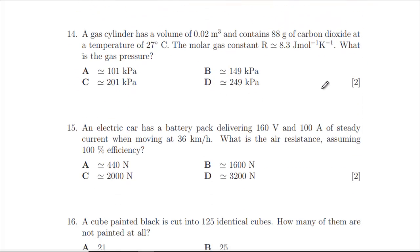Question 14: A gas cylinder has volume 0.02 cubic meters, contains 88 grams of CO2 at temperature 27 degrees Celsius. The molar gas constant R = 8.3 J mol^-1 K^-1. What is the gas pressure? We've got PV = nRT. So we're after P. How many moles have we got? CO2: C is 12, O is 16, so we've got two of those, adds up to 44. So we've got two moles.